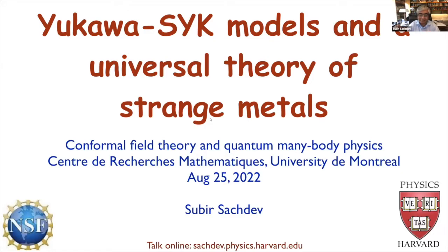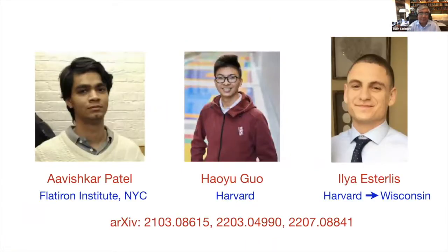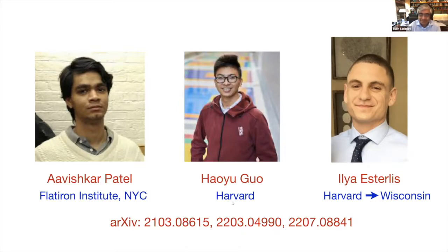Thanks a lot. I'm really enjoying this conference and I'm sorry I can't be there in person, but there's a big family event going on here this week. The work I'm going to tell you about is in collaboration with three amazing young people: Arvish Copertail, who's now a postdoc at the Flatiron Institute; Hao Guo, currently a student at Harvard; and Ilia Esterlis, who's a postdoc at Harvard and will be joining the faculty in Wisconsin next year. We worked on this over the pandemic and made a lot of progress. There are three papers that describe the results I'm going to summarize today.